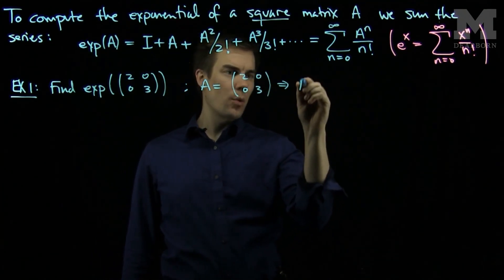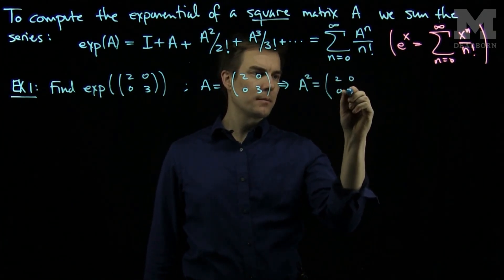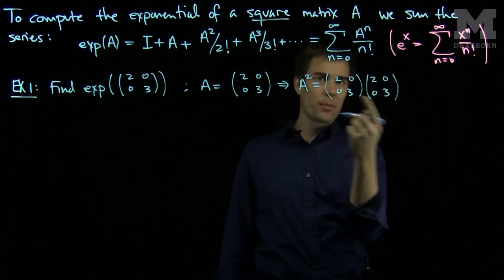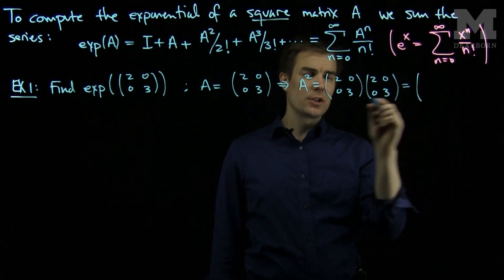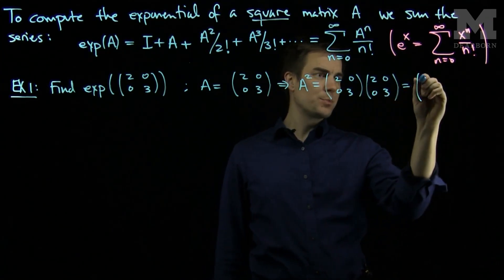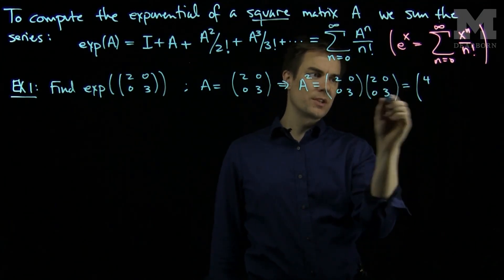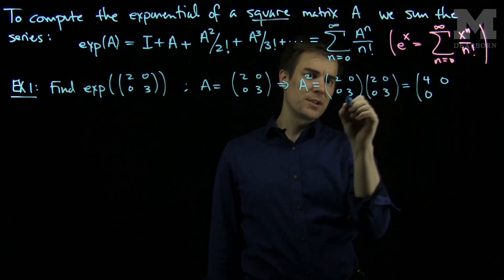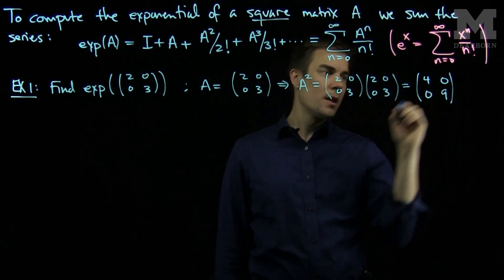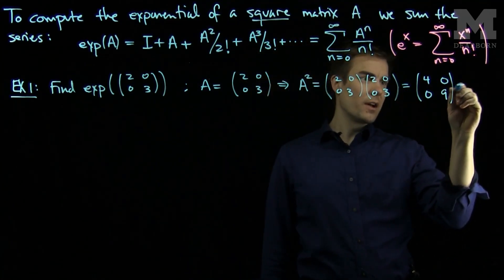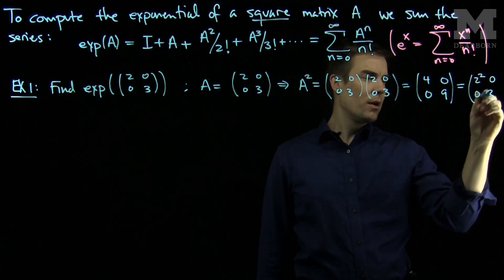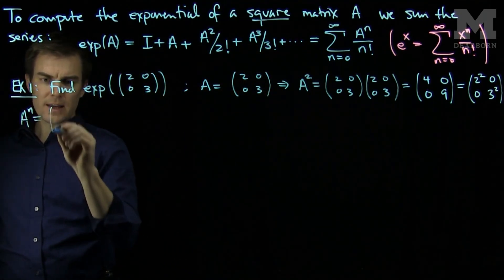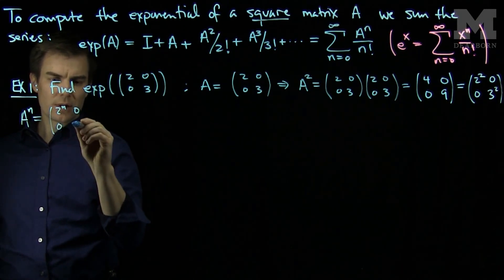A squared, written out, it doesn't matter which order I put the matrices in since the matrix is exactly the same. If I look at the first entry, I see 2 times 2 and 0 times 0, that gives me a 4. Then 2 times 0 and 0 times 3, that's 0. A 0 times 2 and 3 times 0, that's 0. And 3 times 3, that's 9. We can start to see a pattern develop: I have 2 squared, 0, 0, 3 squared. And in general, any power A to the n will be [2 to the n, 0, 0, 3 to the n].